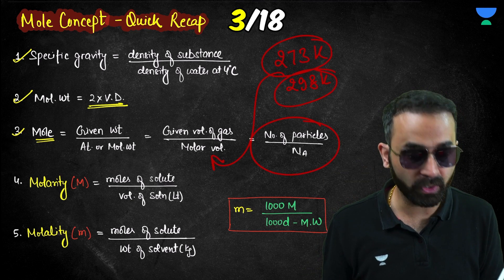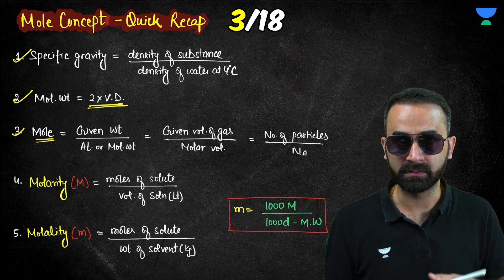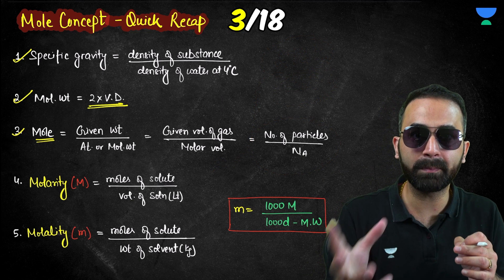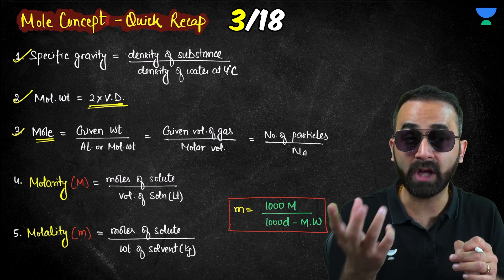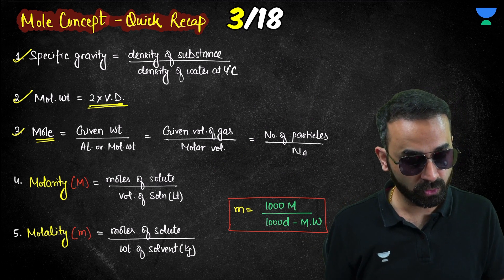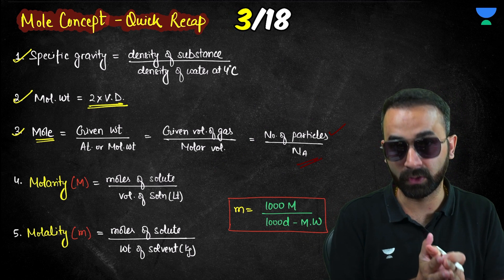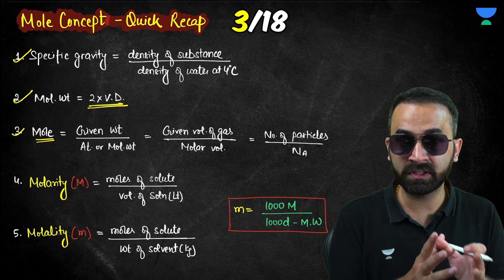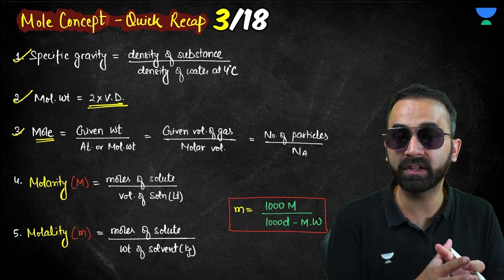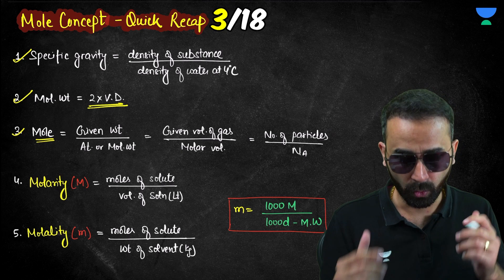If the number of particles is given, divide the number of particles by Avogadro's number to get the number of moles.